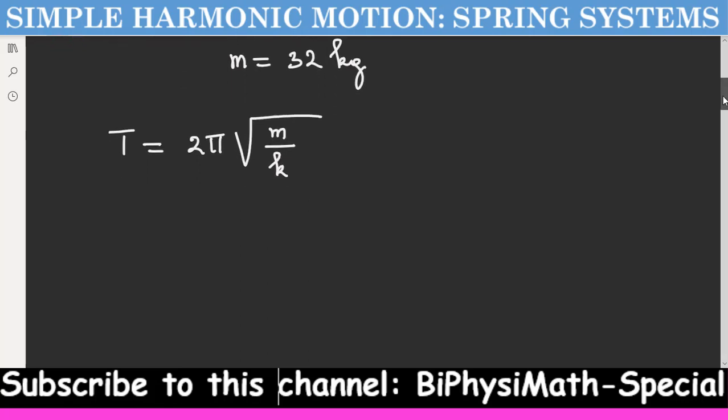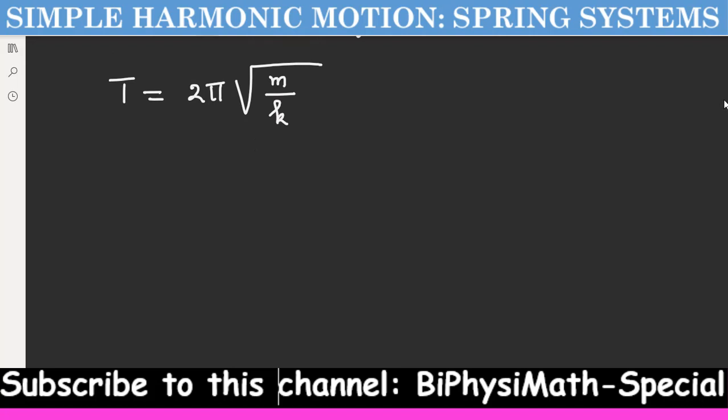Let's solve for K. It's simple algebra. Let's square both sides. Squaring is a trick of algebra. You find T squared equals 4π squared times M over K.